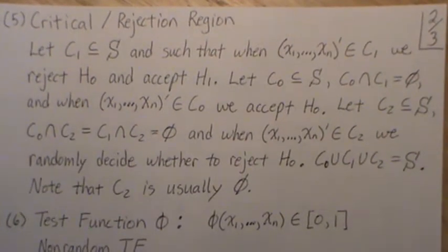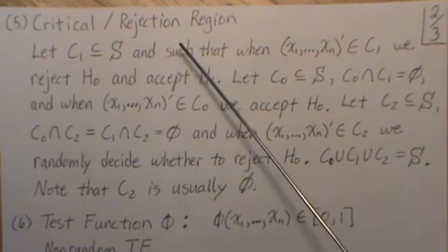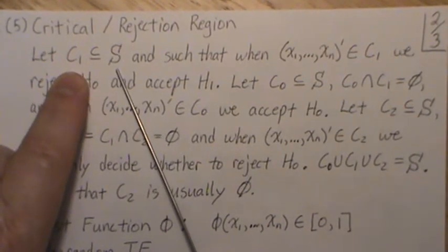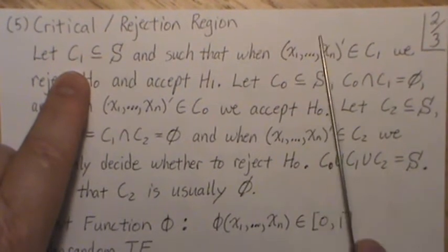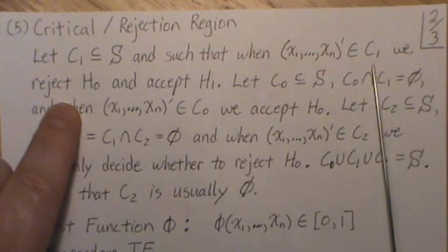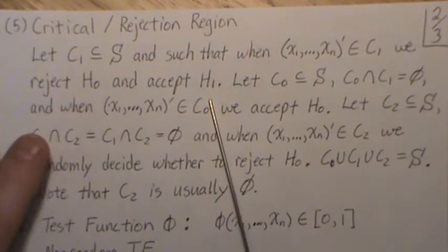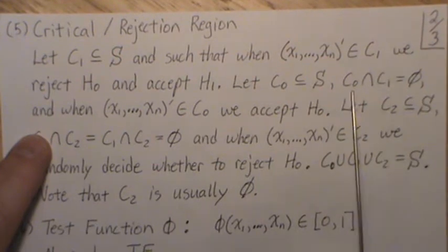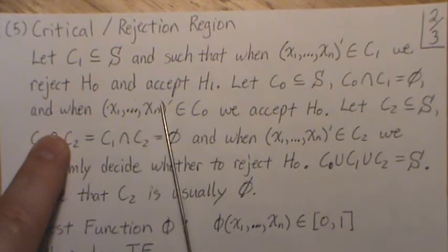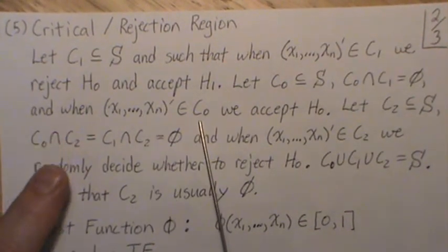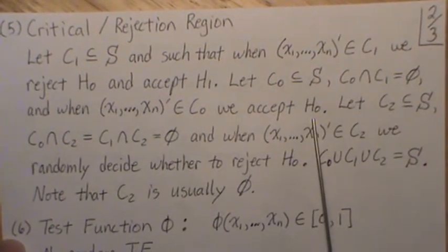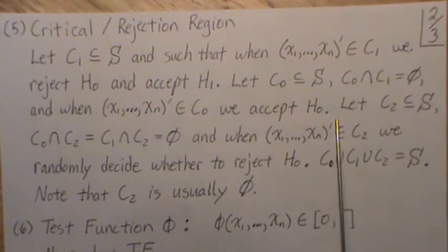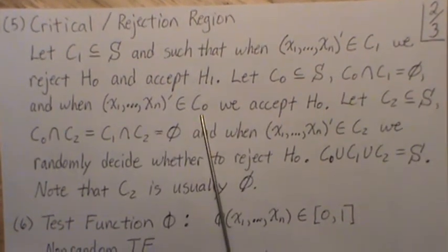Now the critical region, or often called the rejection region: let C1 be a subset of the sample space such that when the sample we take is in C1, we reject H0 and accept H1. Let C0 be a subset of the sample space disjoint from C1, and when the observed sample is in this subspace we accept H0.